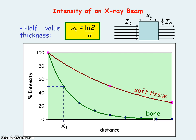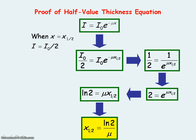The linear attenuation coefficient for bone is greater than that for soft tissue, and so the half value thickness for bone is much shorter. Here is the proof of the half value thickness equation, which is a similar proof to the half-life equation for radioactive decay, where the half-life equals the natural log of 2 divided by the decay constant.